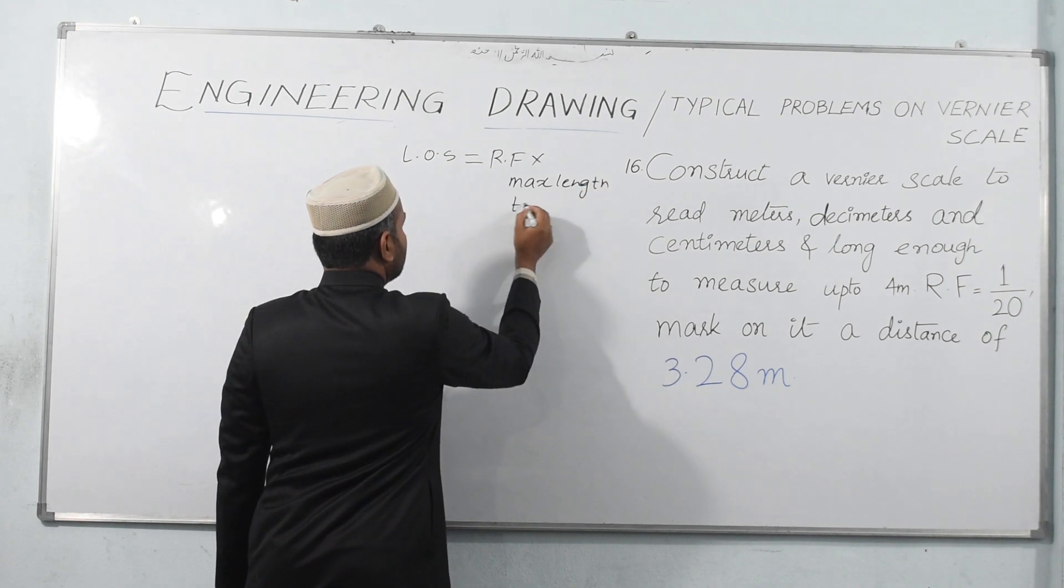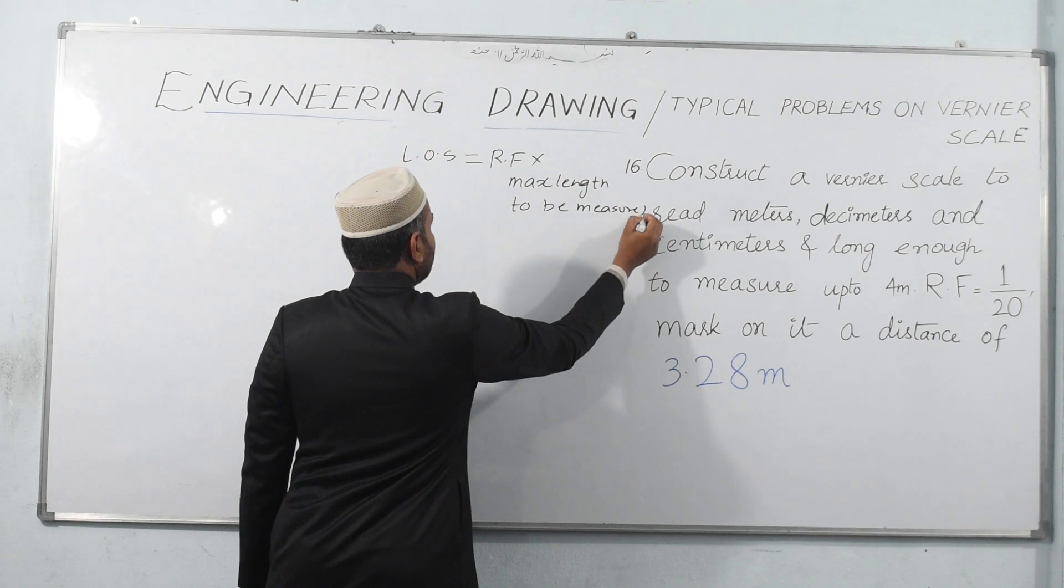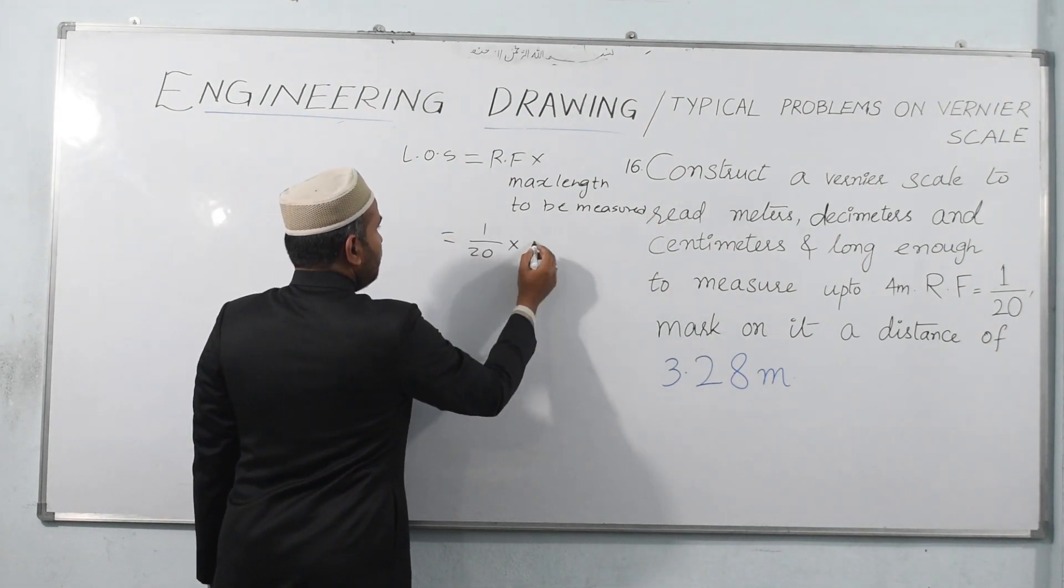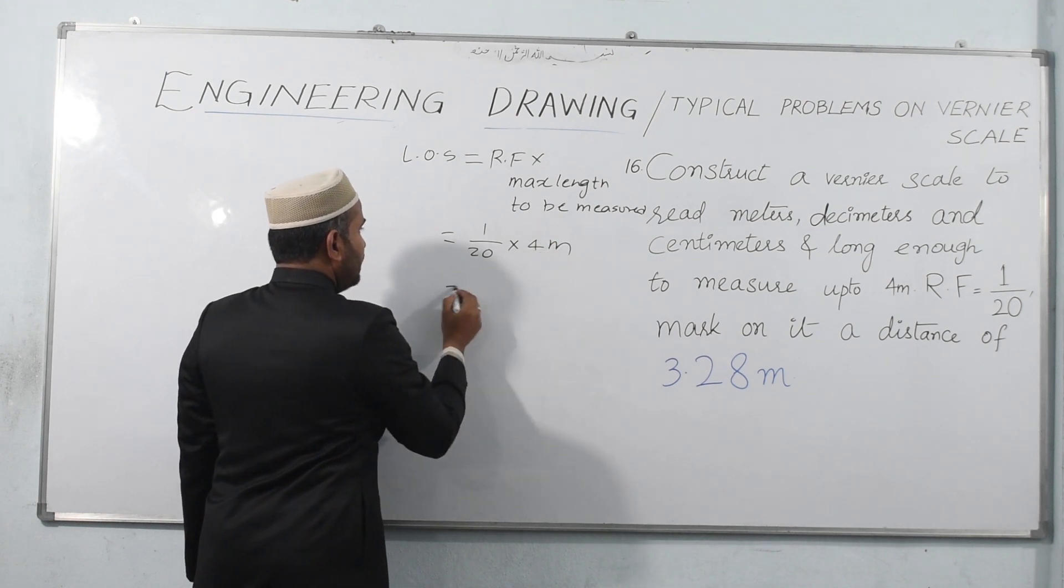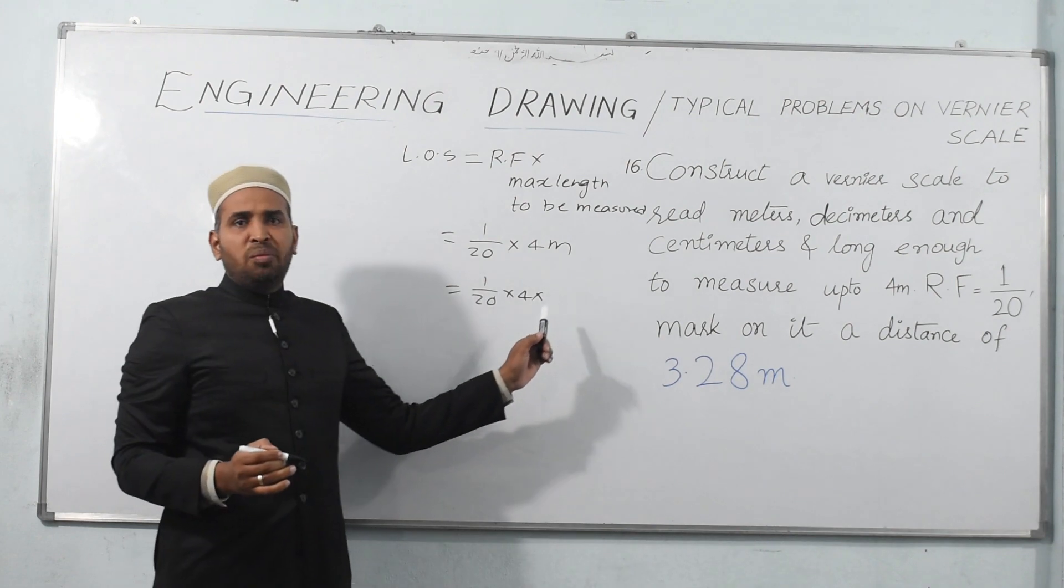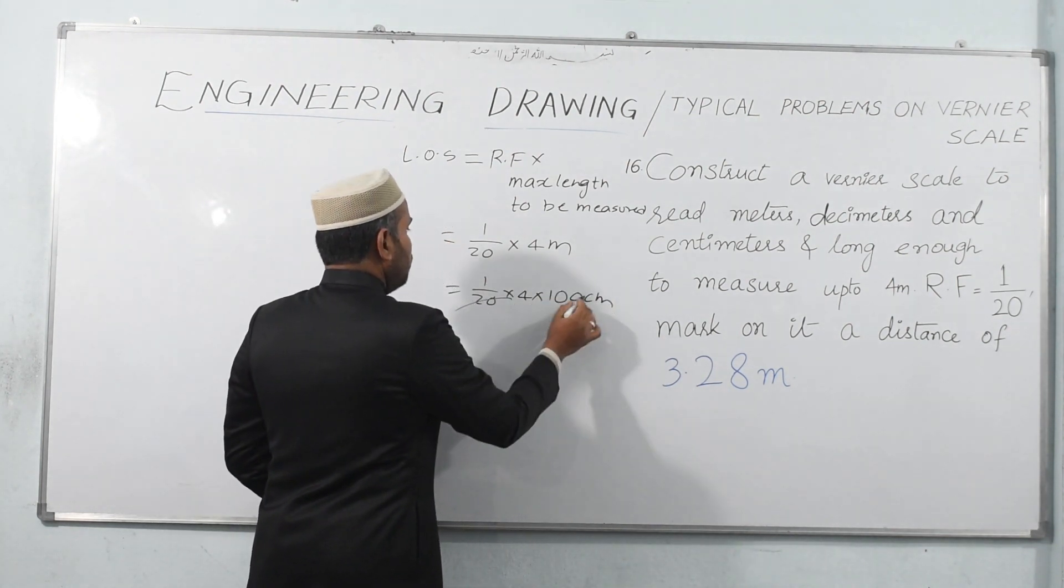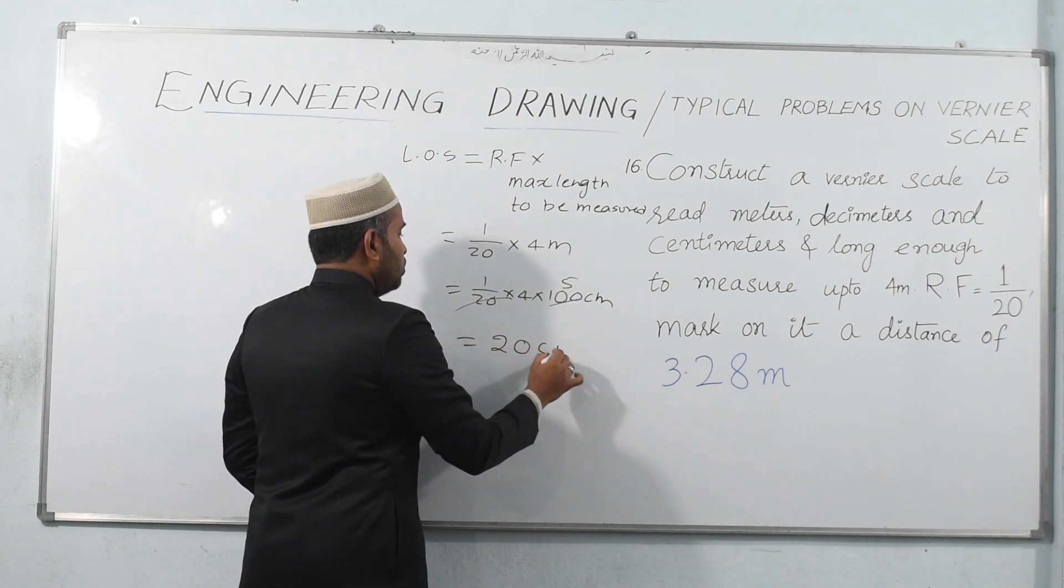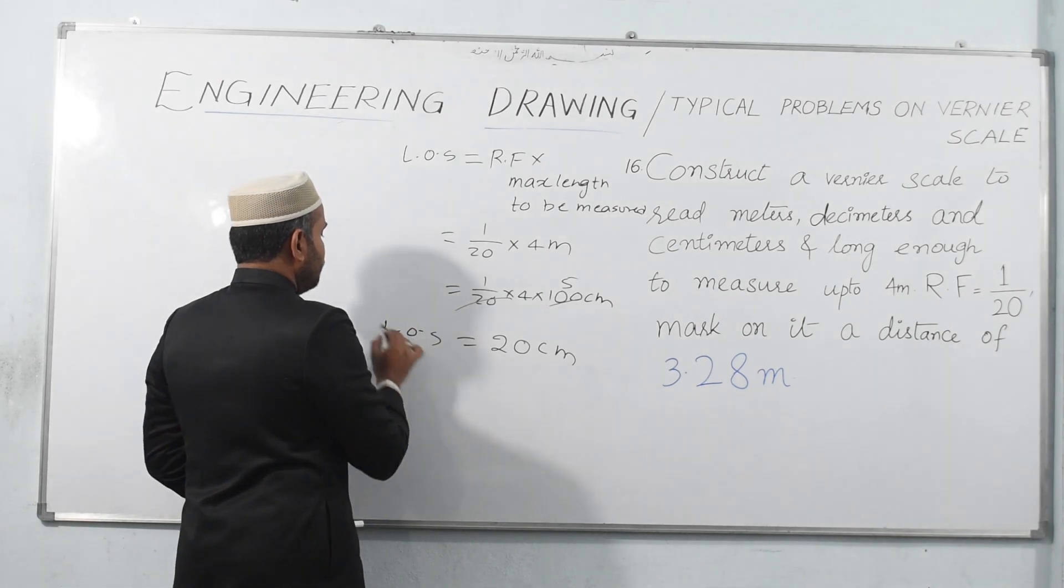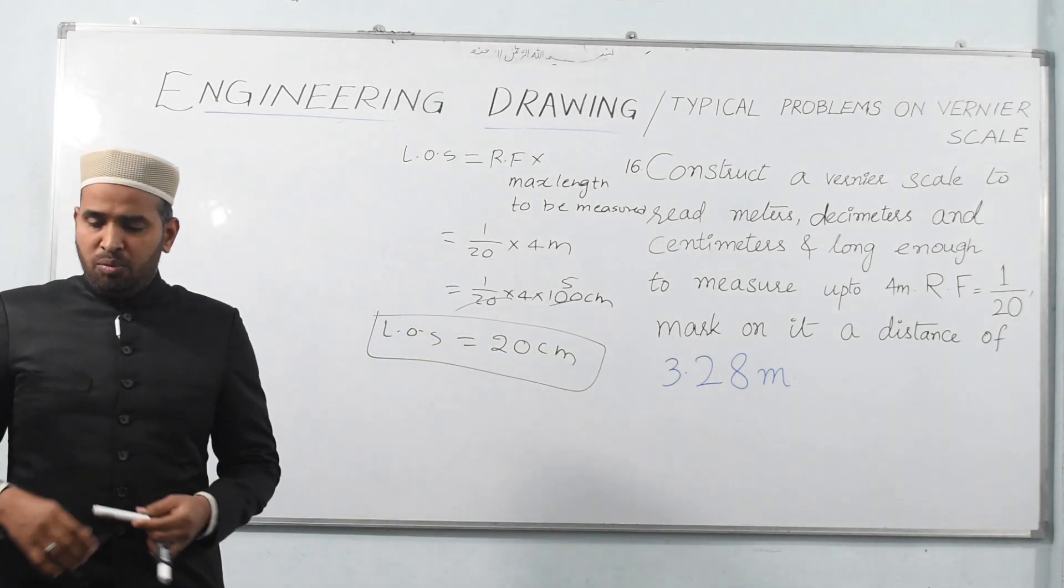What is RF? 1 by 20. What is the maximum? That is 4 meters. 1 by 20 into 4. 1 meter can be written as 100 centimeters, so that reduces to 20 centimeters. Now by taking this I am going to draw a diagram.